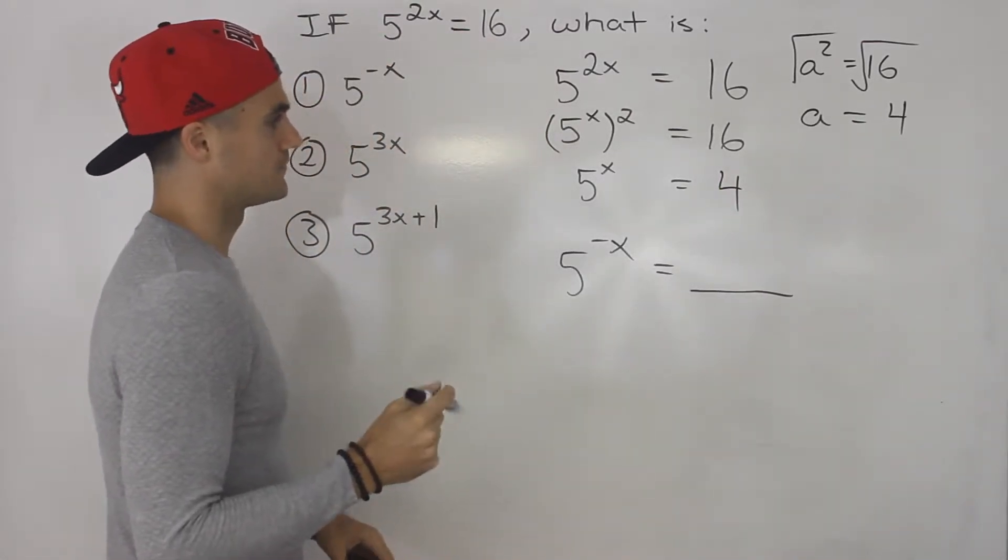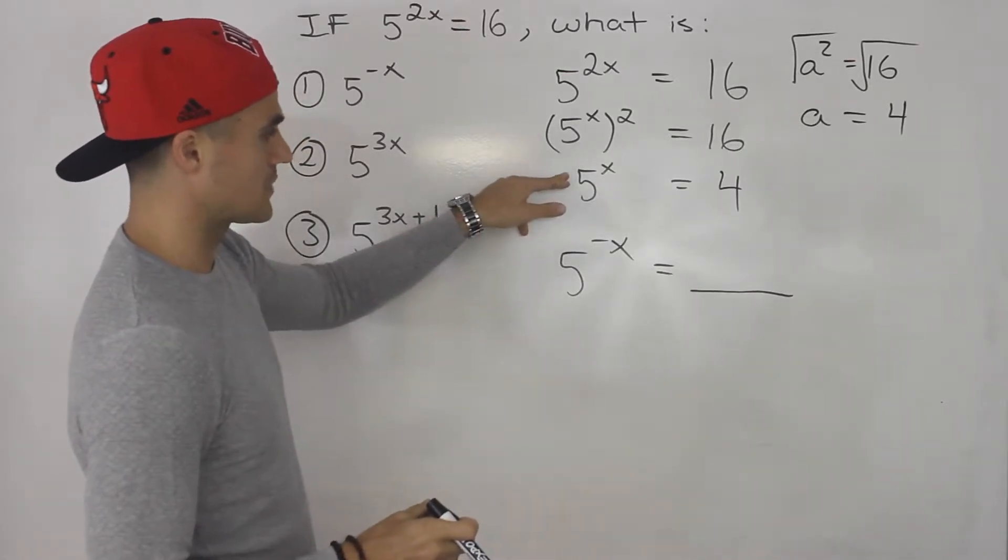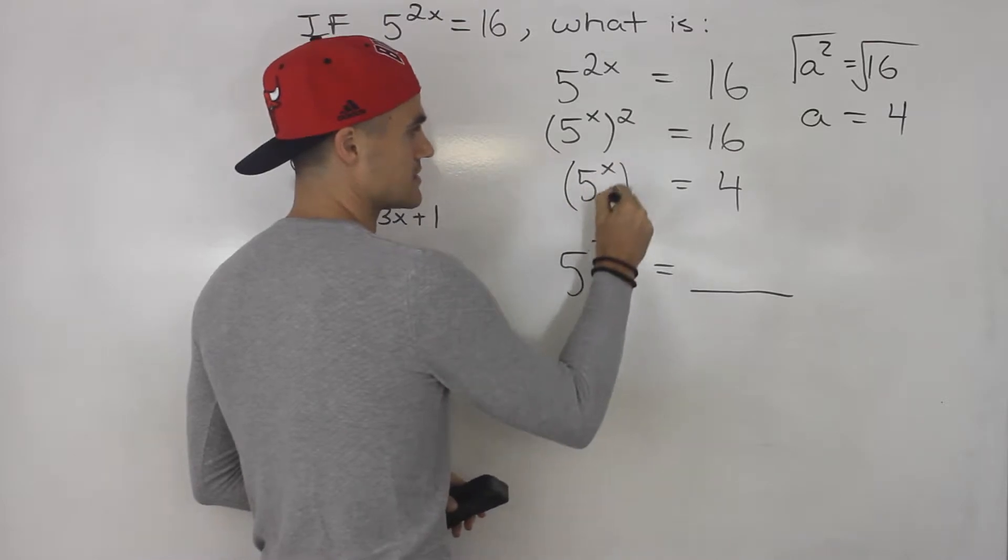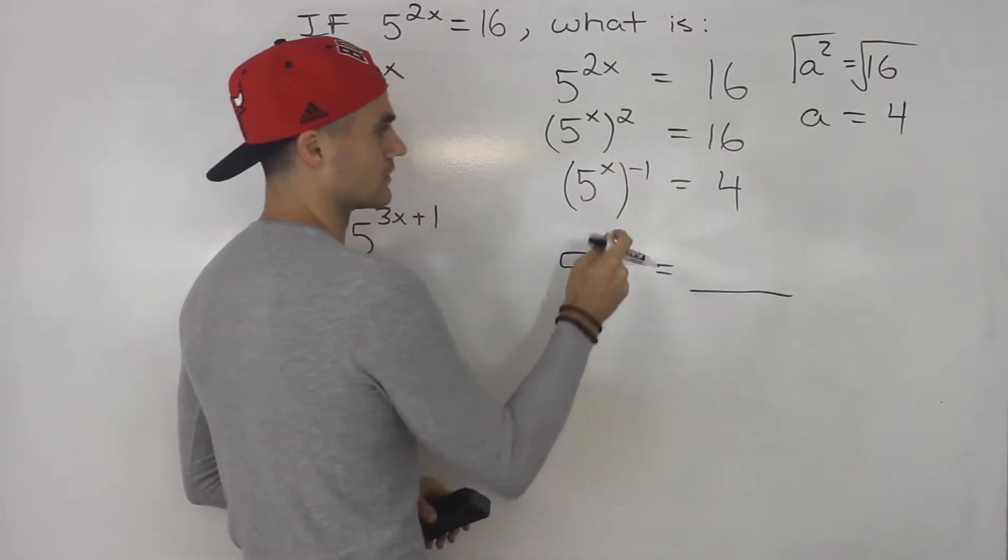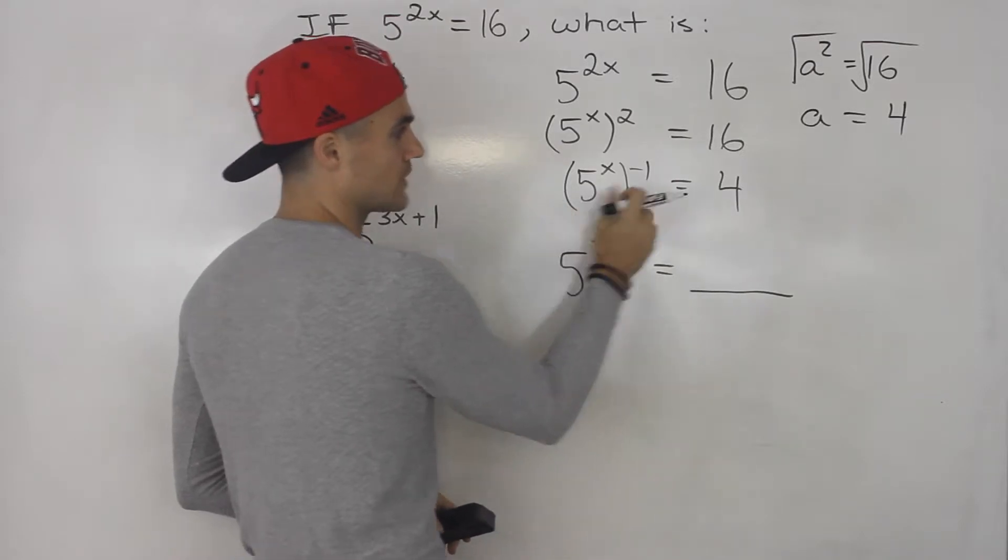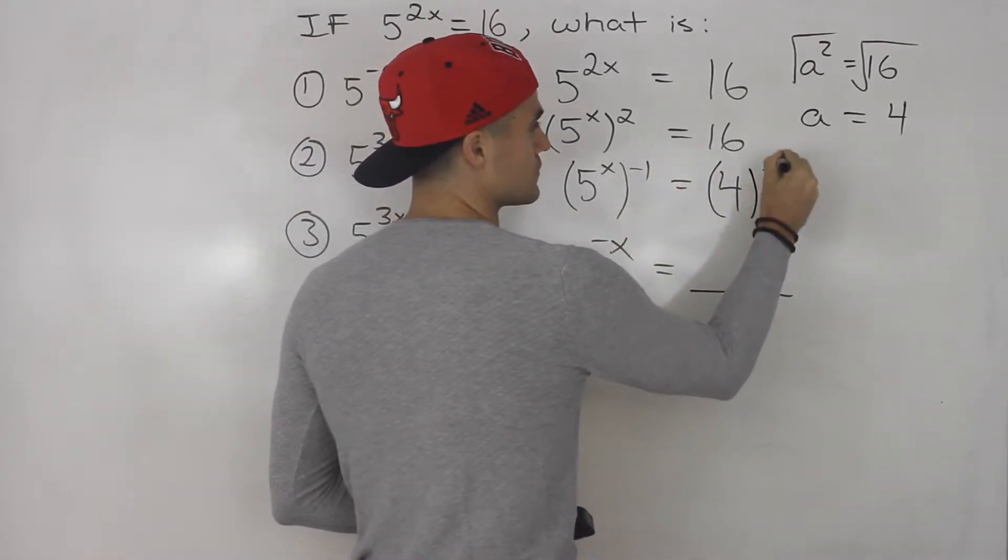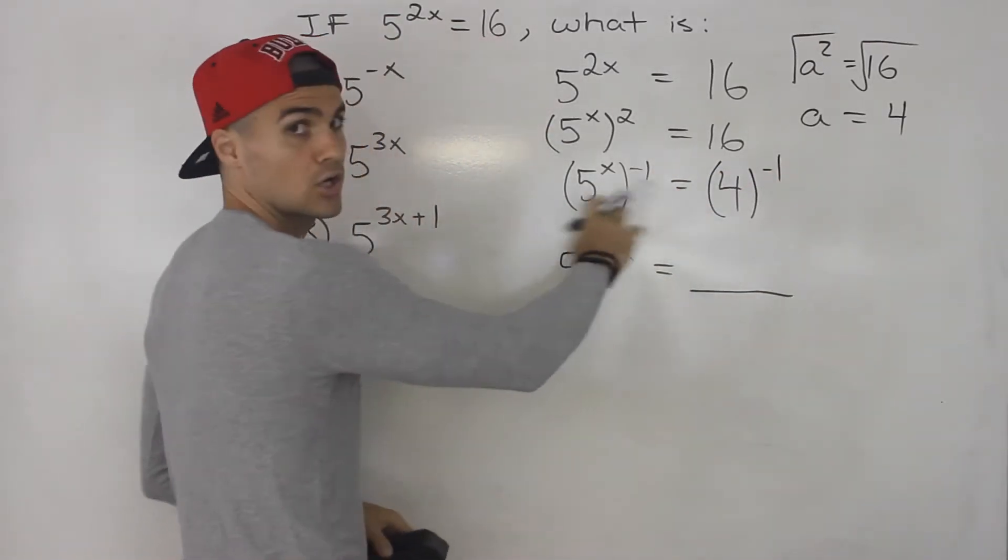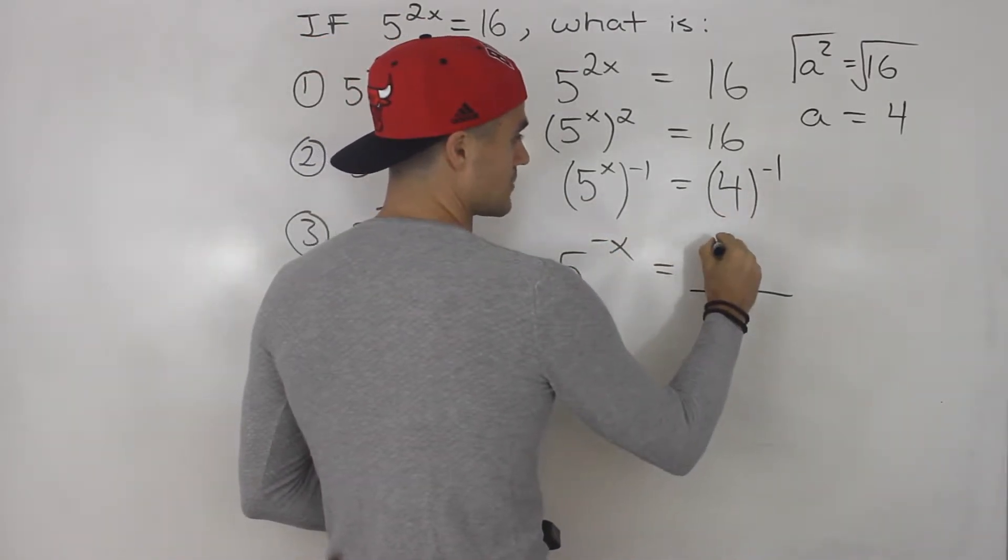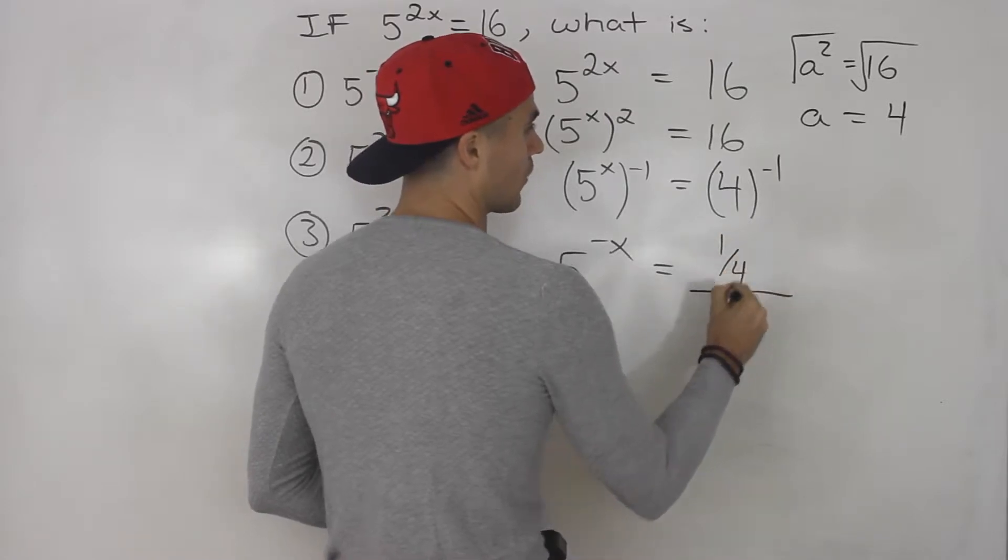So now, how can we get from here to here? Well, we can just take this to the power of negative 1, because negative 1 times x gives us negative x. But what we do to one side, we got to do to the other, right? Because this is an equality here. So 4 to the negative 1, that ends up being 1 over 4.